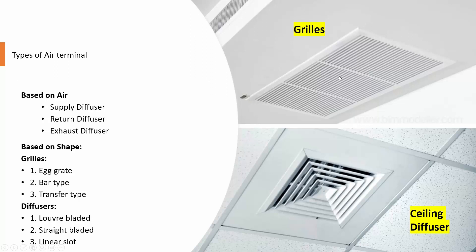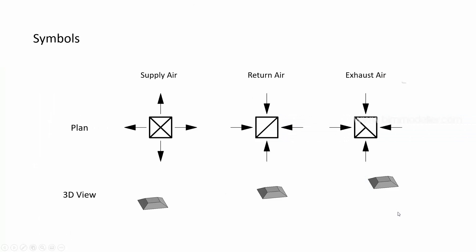The image on the top is a grill, and on the bottom you see a ceiling diffuser. In every design drawing we have symbols. For air terminals placed on the floor plan, we have specific symbols. The arrow indicates the airflow direction — for supply, it goes outside; for return, it goes inside; for exhaust, it also goes inside.